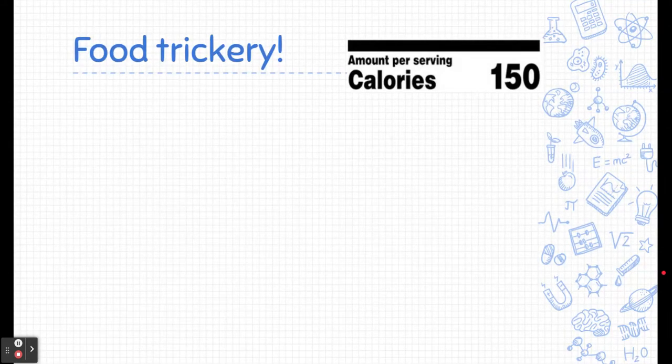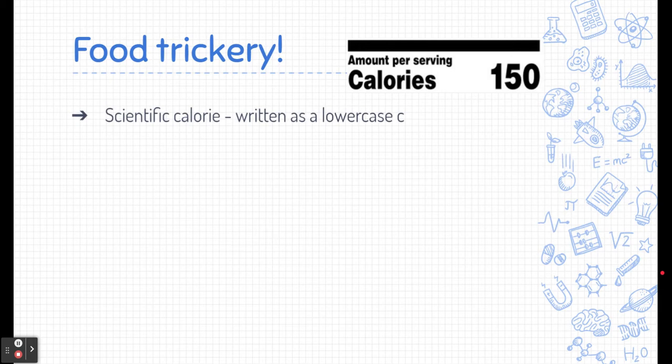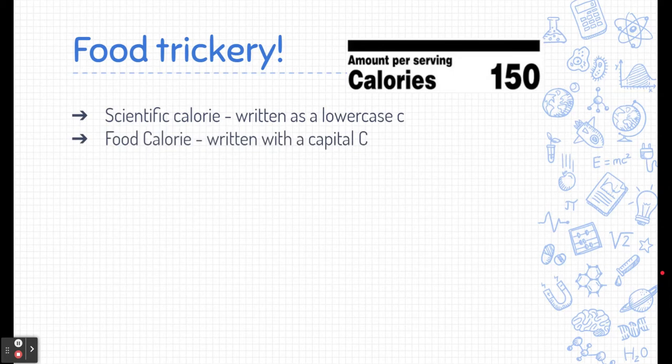Now, there's a little bit of food trickery going on when we talk about calories. In science, a calorie is written with a lowercase c. That's a little bit different on food labels. On food labels, calorie is written with a capital C, and they're slightly different values. They're related, but one capital calorie is equal to 1,000 lowercase calories, also sometimes called a kilocalorie or a kilo, which means 1,000 calorie, which is a unit of energy.